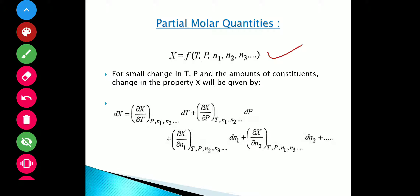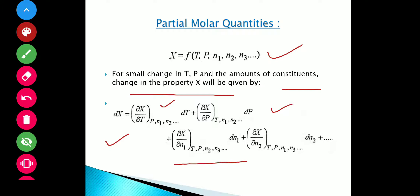For a very small change in temperature, pressure, and the amount of constituents, the change in property X will be given by this expression, where the total change in X equals the variation of X with temperature keeping pressure and composition of other constituents constant, multiplied by dT, and so on. In this way we get the total change in X in terms of different parameters.